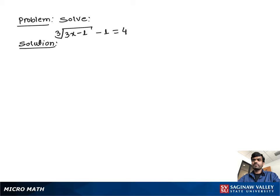Solve: cube root of (3x minus 1) minus 1 equals 4. Let's write the problem one more time — cube root of (3x minus 1) minus 1 equals 4.